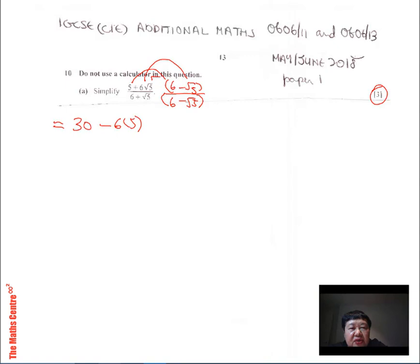Then the two nearest to each other will be 6 root 5 times 6, which is 36 root 5. And the two furthest away, 5 times negative root 5 will be minus 5 root 5.